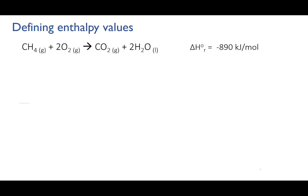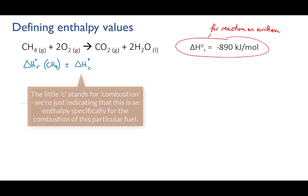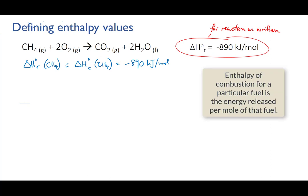Now let's look at a combustion reaction. Here we're going to burn methane in oxygen to give carbon dioxide and water. The enthalpy of reaction is minus 890 kilojoules per mole. That means that if we run this reaction as written — with one mole of methane and two moles of oxygen — we will get 890 kilojoules of energy out; it's exothermic. So the enthalpy of combustion of methane is also minus 890 kilojoules per mole. Note that enthalpies of combustion are defined for one mole of a specific fuel.